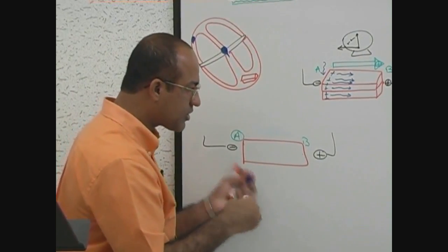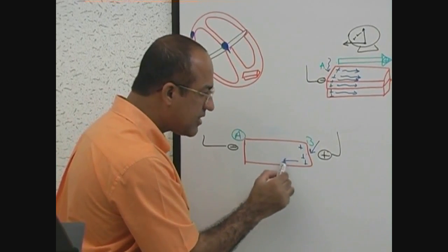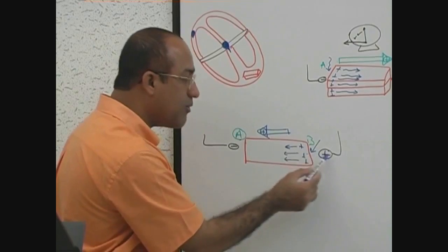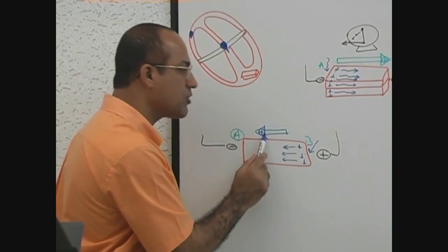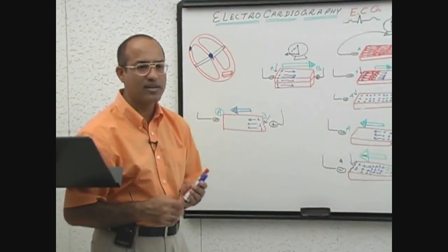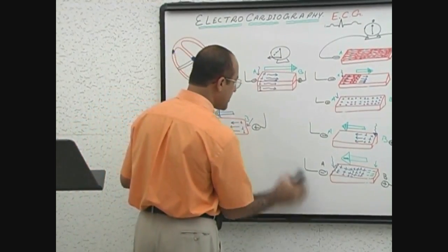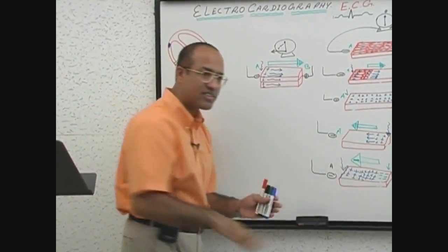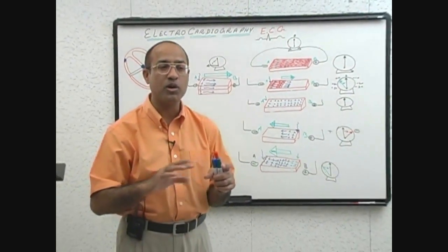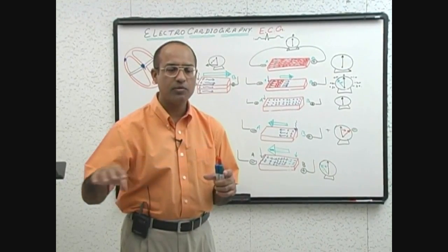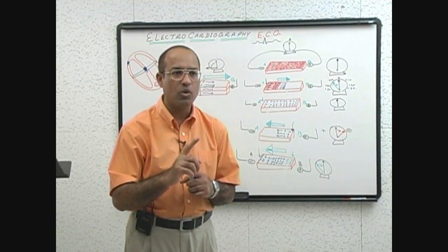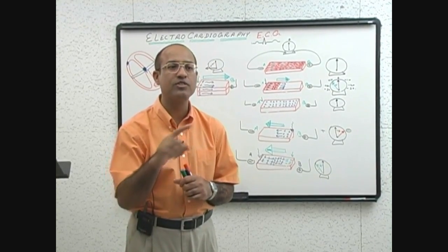Now if I stimulate point B and the wave of depolarization moves from B to A, the positive vector is moving away from the positive electrode — that is, towards the negative electrode. Deflection will be negative. One more principle: some myocardial tissue are fast conductors and other myocardial tissues are slow conductors. Through some myocardial tissue, current passes slowly or with moderate velocity, and through other tissue, current passes very rapidly. What will be the difference in needle fluctuation when the velocity of current through the myocardial piece is different? Let's discuss that.